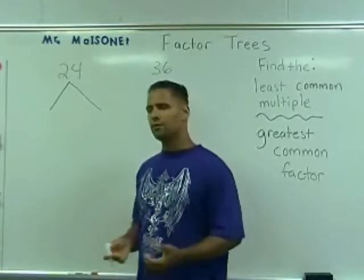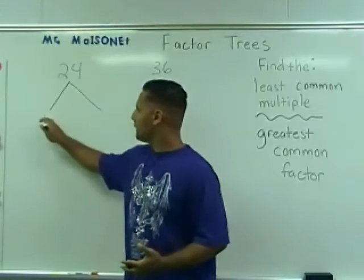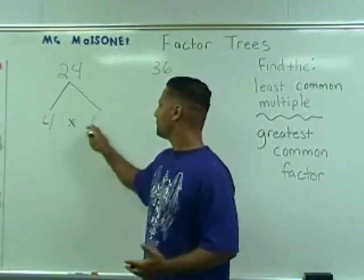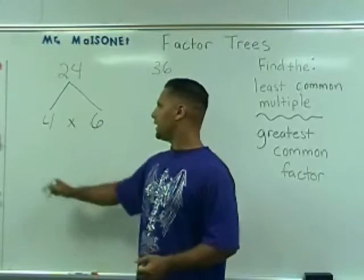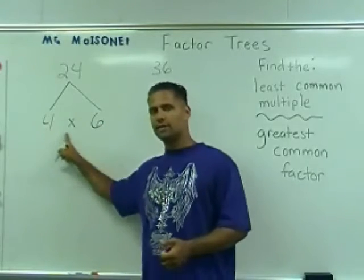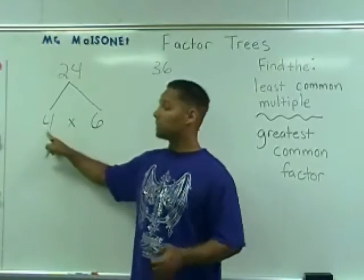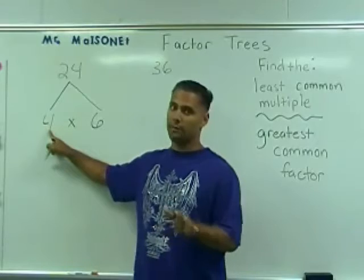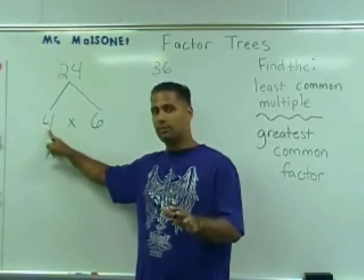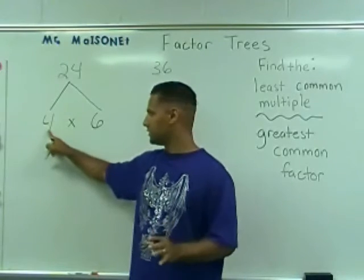So what can make 24? Well, here's one example: we can do 4 times 6. Now, what you've got to do is when you break them down into the different factors, ask yourself: are those factors prime numbers? If they are not prime numbers, you are not finished with your prime factorization.